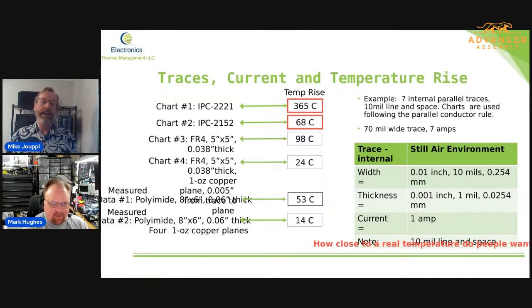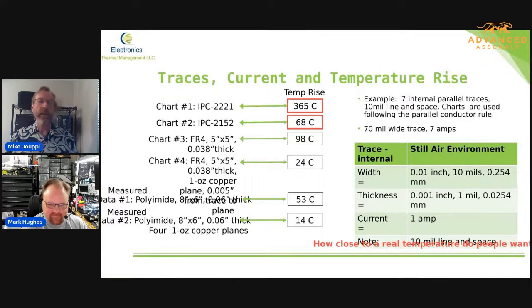We look at IPC-2221 for an internal trace: 70 mils at seven amps tells you you're going to be at 365 degrees C. You're burning it up. And it is what it is. When you understand it, well, here's a side note — if you go back to that chart I showed with the original data, there are traces that were taken off the board and powered up in air by themselves, not attached to the board, and those actually correspond very close to the internal trace chart from IPC-2221.